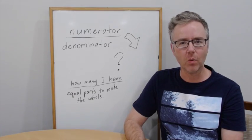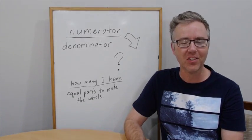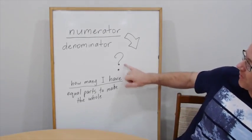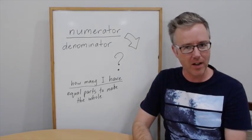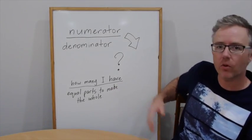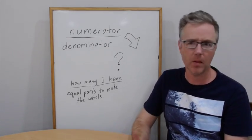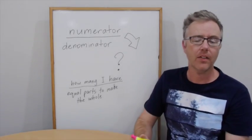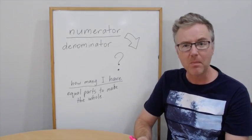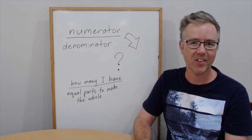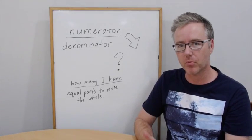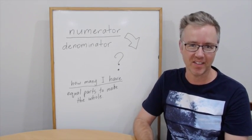You might think, what's the whole point of the numerator and the denominator? The numerator is how many I have — the numbers that I'm talking about. The denominator represents the equal parts that make the whole. I've actually got some chocolate that I've divided up equally, and we're going to talk about that briefly before we get started into today's lesson.